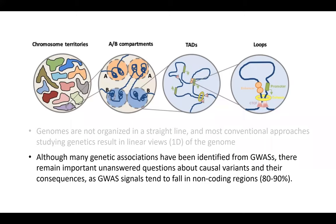The 3D genomics has a huge impact on human diseases. Although many genetic associations have been identified from GWAS, important questions remain about causal variants, since GWAS signals tend to fall in non-coding regions. Previously, when a SNP was identified, people assumed the closest gene was the functional gene. But with 3D genomics, sometimes the functional gene that a SNP regulates can be a megabase away — very far. That means many human disease GWAS results have to be revisited and rewritten in terms of the causal gene involved.